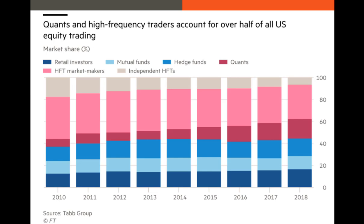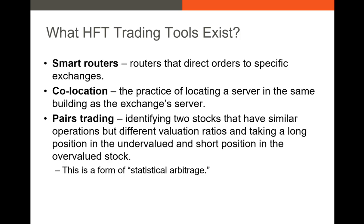This caused a huge SEC investigation, which determined the original trader had been engaging in market manipulation. The big takeaway was that high frequency traders contributed to both the decline and the rebound. A graphic from the Financial Times breaks down US equity trading: high frequency traders make up somewhere between 40 and 50 percent of the US equities market, depending on the time period. Retail investors represent less than 20 percent, with mutual funds, hedge funds, and quants making up additional sizable percentages.